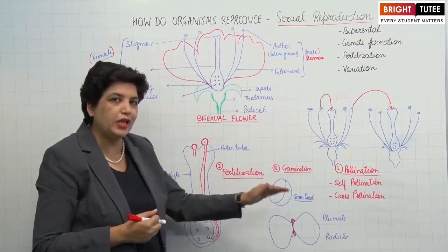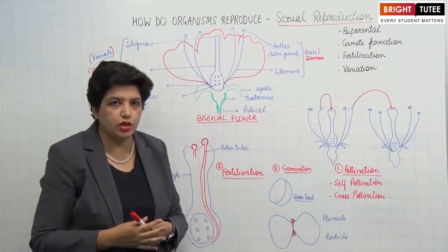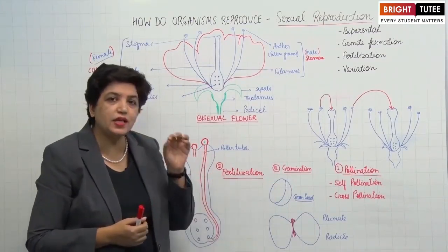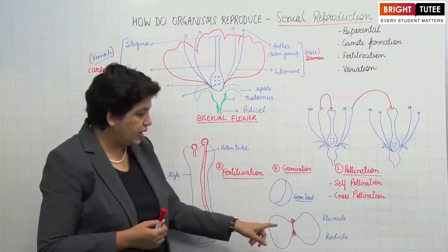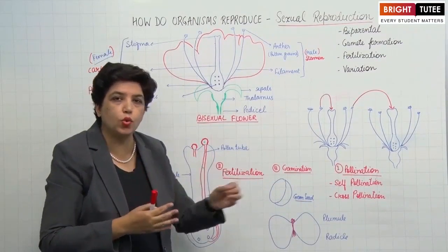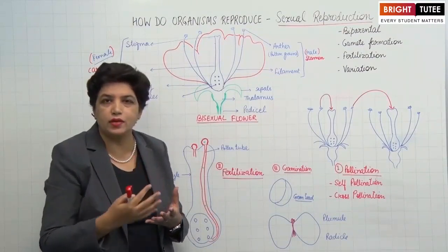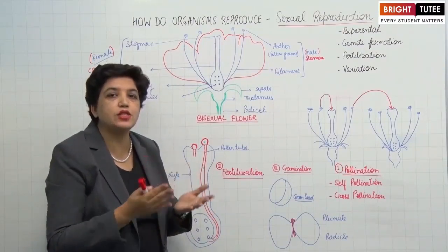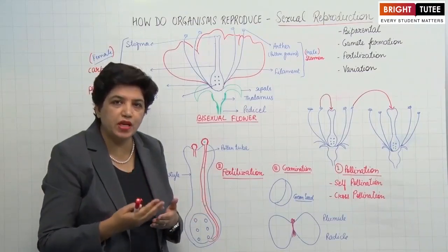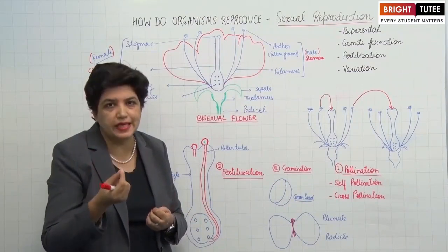The third step after pollination and fertilization is germination. The seed has a dormant embryo. When conditions are favorable — when the seed is sown in moist soil and gets warmth, water, and nutrients — it starts germinating. This process is called germination, when the seed gives rise to a new plant called a seedling.